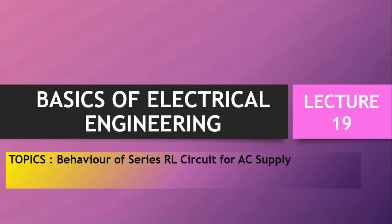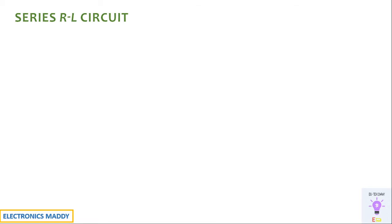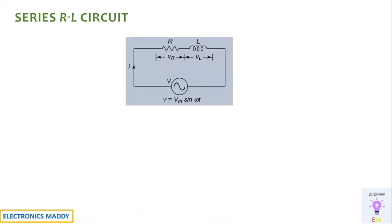Hello everyone, welcome to yet another lecture on basics of electrical engineering. In this video we're going to talk about the behavior of a series RL circuit for AC supply. In our previous videos we have already seen the response of a resistor and an inductor connected to an AC supply, but not ideally will only a resistor or inductor be present — there will be combinations.